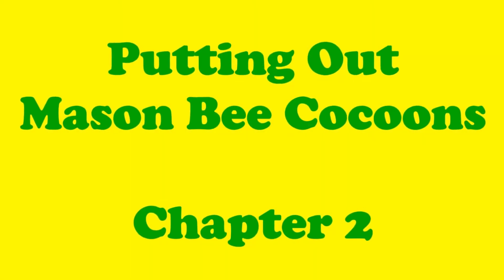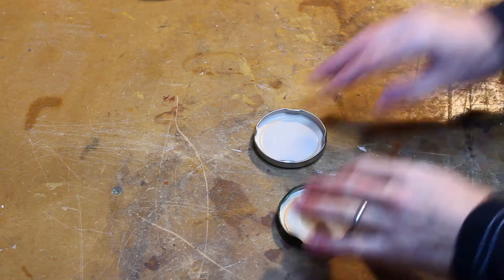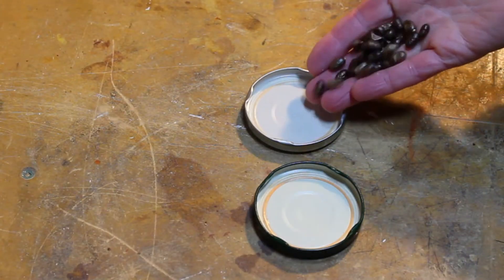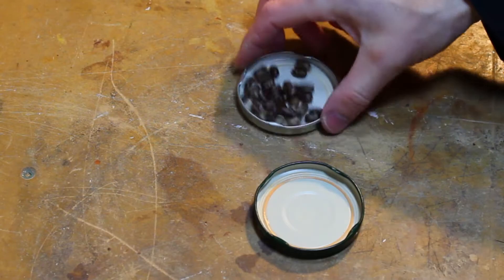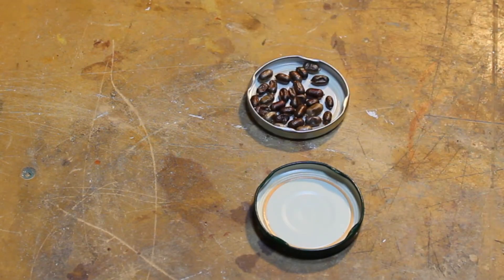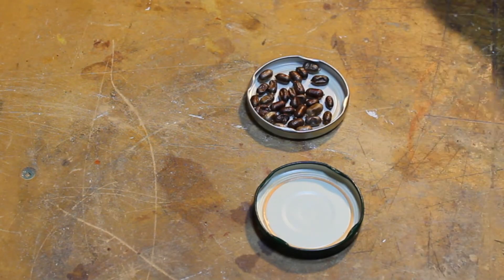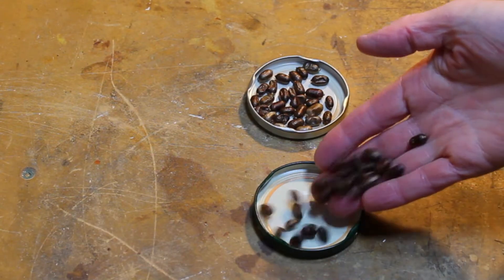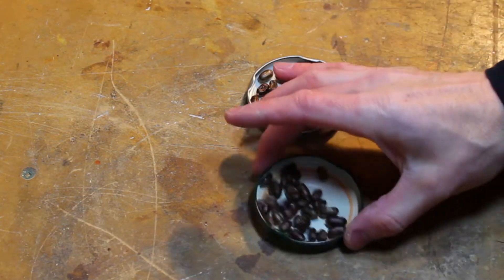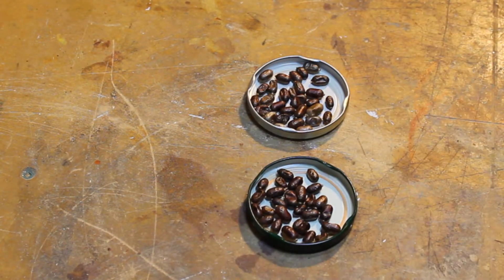Putting out mason bee cocoons. Putting the cocoons in little trays or jar lids will help prevent them from falling out of the hatching area if it gets a little windy. It will also keep them hidden from any hungry visitors. Mason bee cocoons should be set out in a dry covered area located near the nesting houses.